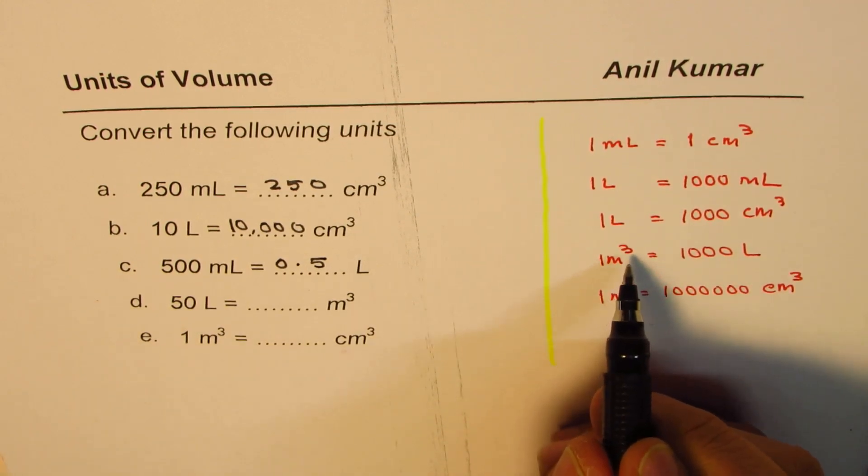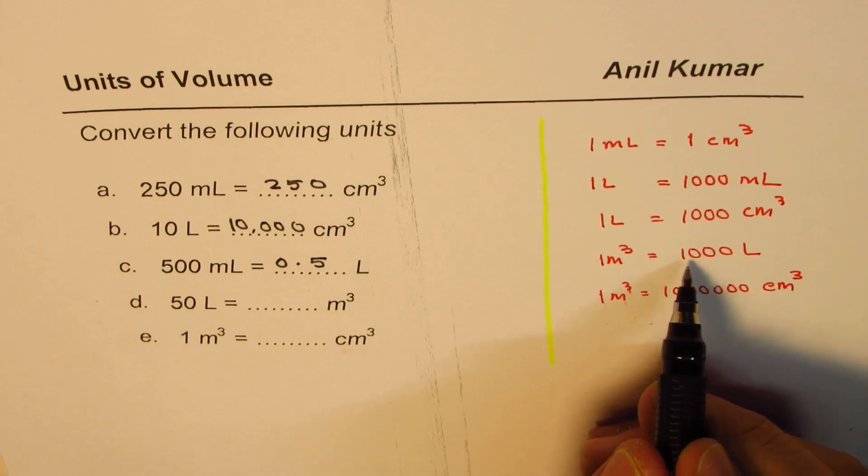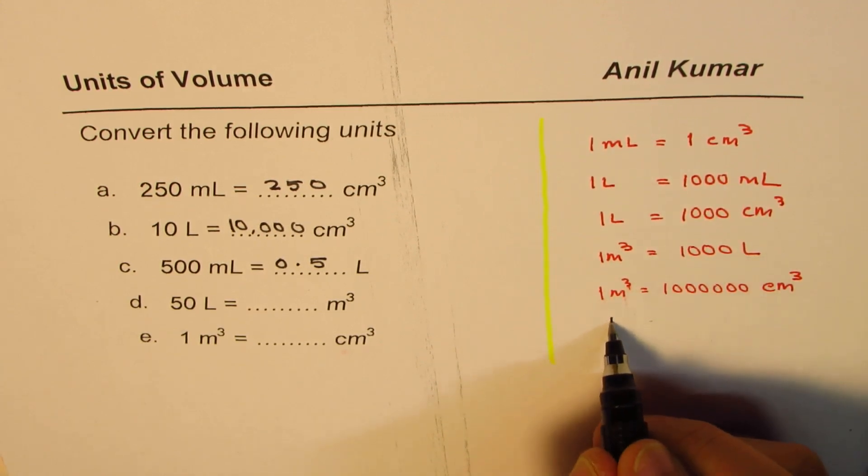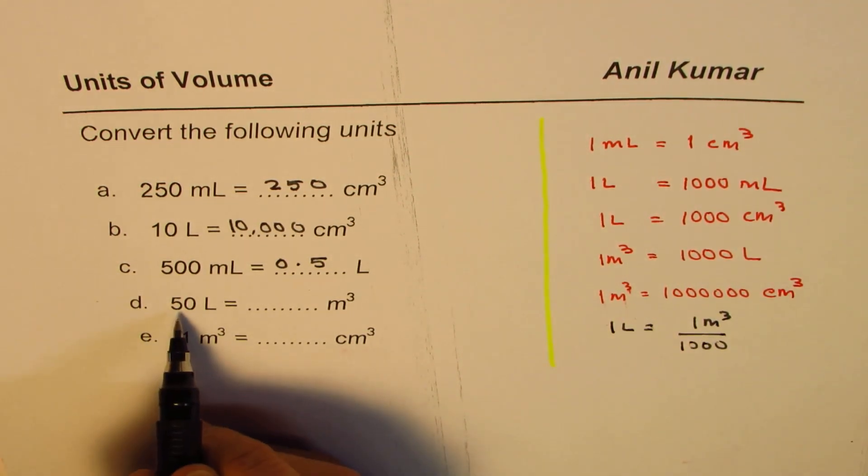50 liters, now one meter cubed is a big number. It is equals to 1000 liters, so one liter will be one meter cube divided by 1000. Do you see that? So you have to divide this by 1000.